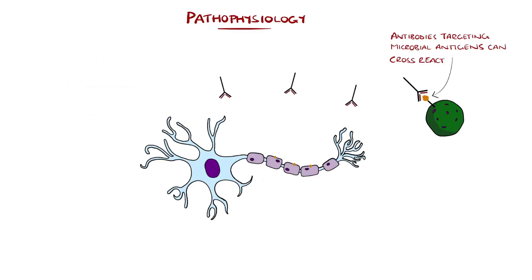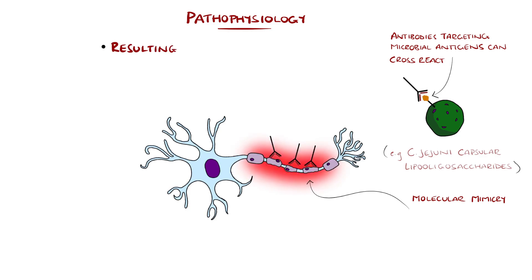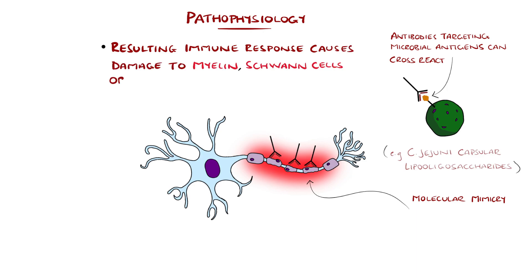Campylobacter jejuni bacterial capsular lipo-oligosaccharides, for example, are thought to generate antibodies that cross-react with myelin. This results in damage to the myelin, the Schwann cells that produce the myelin, or the axon itself, meaning that nerve signals are no longer able to be transmitted along the nerve as effectively.